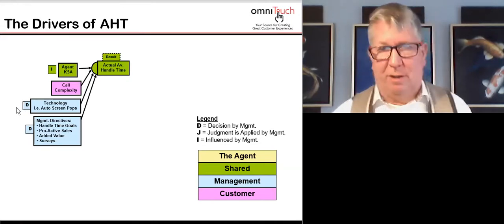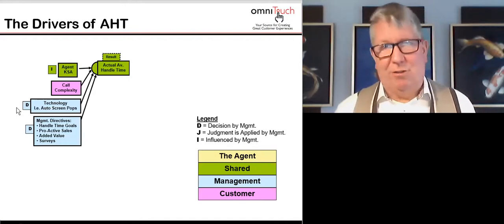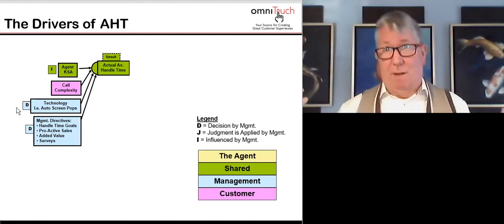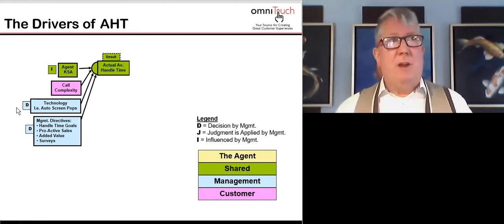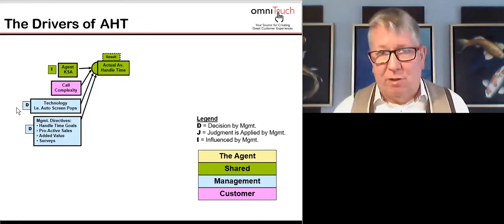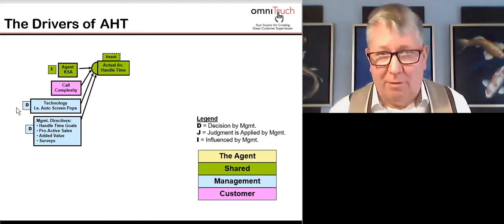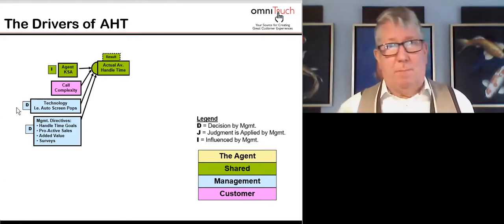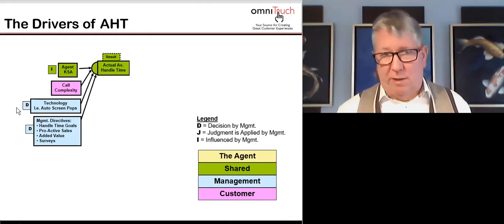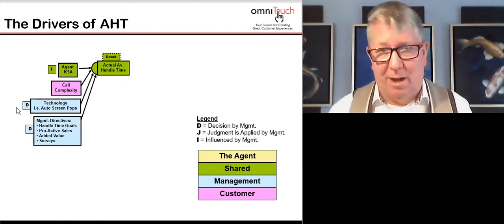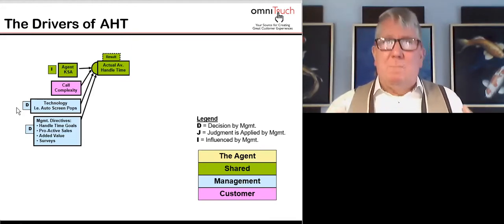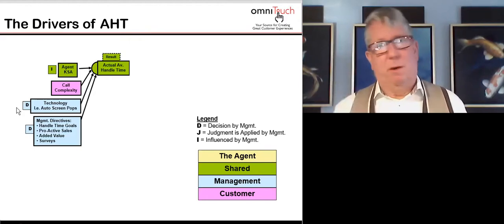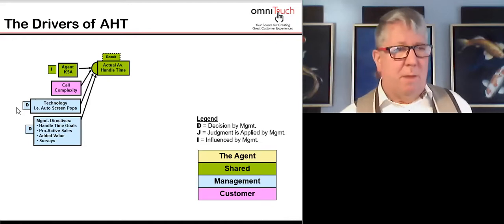The second box is technology. Management decides what technology to buy, not agents. Technology can help — reducing or optimizing AHT — or it can hurt, stretching AHT. For example, if the system hangs, AHT goes up, but that's the technology, not the agent. I met a bank where agents had to open 13 different systems to serve a customer. The bank realized that reducing those 13 systems to even eight or nine would significantly optimize AHT. The key learning: the biggest improvements in AHT come from improving process or technology, not the agent.